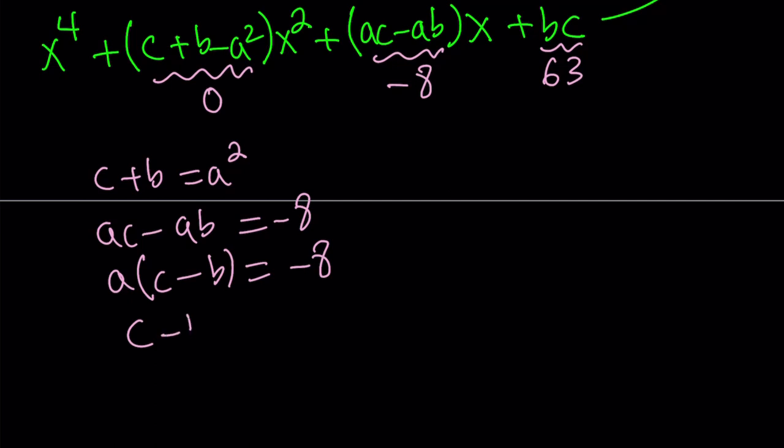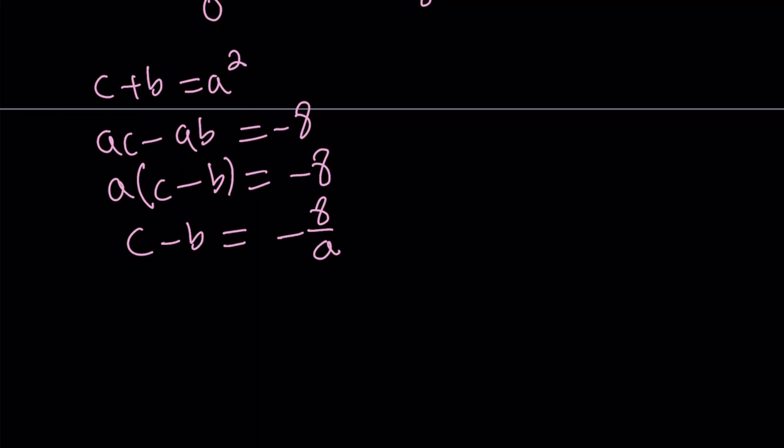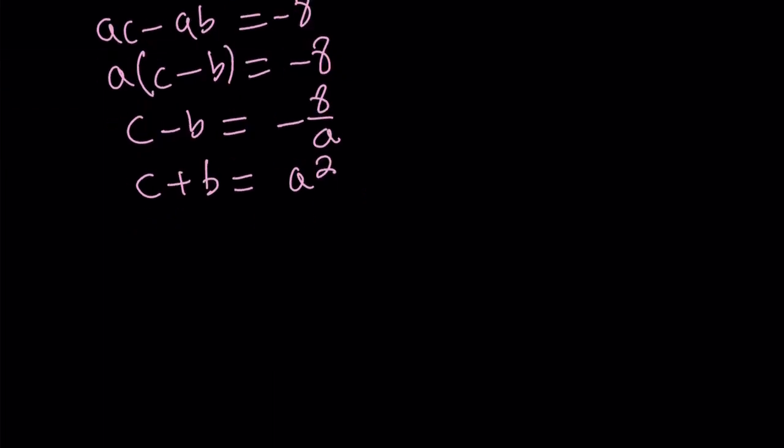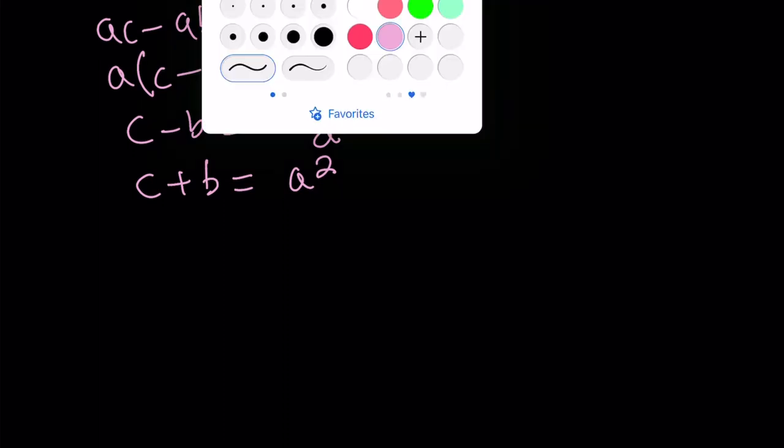My goal is to isolate c minus b. So let's go ahead and write it as negative 8 over a. Why am I trying to isolate c minus b instead of a? Because I have c plus b in the other equation and I can basically use elimination. I can eliminate b very easily and write c in terms of a which is nice.